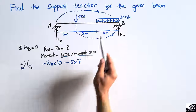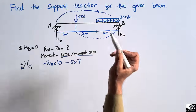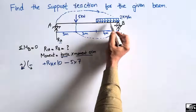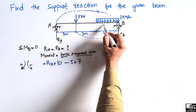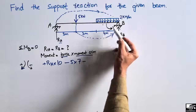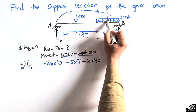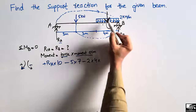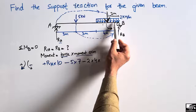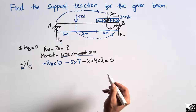The uniformly distributed load also creates a moment about point B. First, we convert it to a point load: 2 kN/m over 4 meters gives a total force of 2 × 4 = 8 kN acting downward. This creates an anti-clockwise moment about B, taken as negative. This point load acts at the center of the distributed load, so the moment arm is 2 meters from the center of the UDL to its end, giving a moment of −2 × 4 × 2.